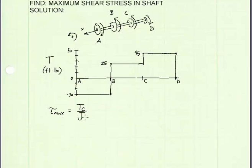The equation for maximum shear stress in a shaft is the internal torque T times radius C divided by polar moment of inertia J. Because the diameter of our shaft does not change, C and J are constant along the entire length of the shaft. Therefore, our maximum shear stress will correspond to our maximum internal torque.